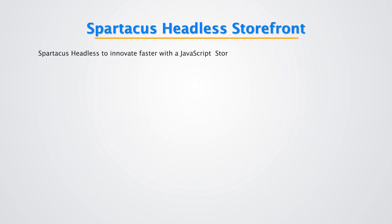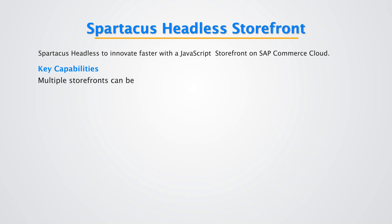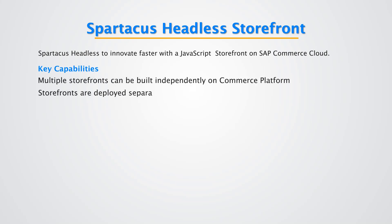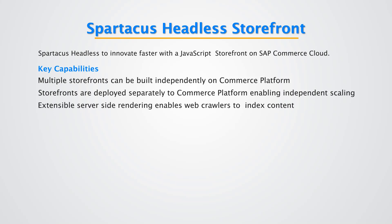Spartacus is a headless storefront built with AngularJS on SAP Commerce Cloud. Key capabilities include: multiple independent storefronts can be built on the commerce platform, enabling independent scaling by deploying storefronts on separate servers, and enabling web crawlers to index content without impact on customer experience.